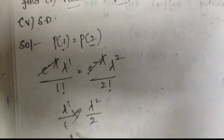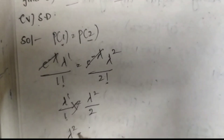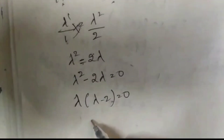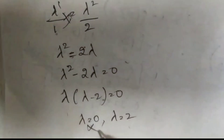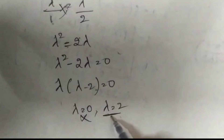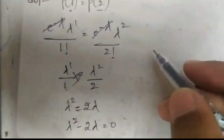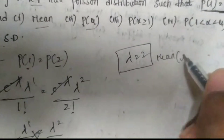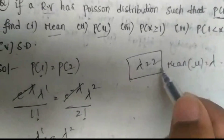By cross-multiplying we get λ² / λ = 2λ, so λ² − 2λ = 0. Taking λ common: λ(λ − 2) = 0, giving λ = 0 or λ = 2. We neglect λ = 0 since Poisson distribution takes only non-negative values, so λ = 2. Since mean μ = λ, the mean of this Poisson distribution is 2.